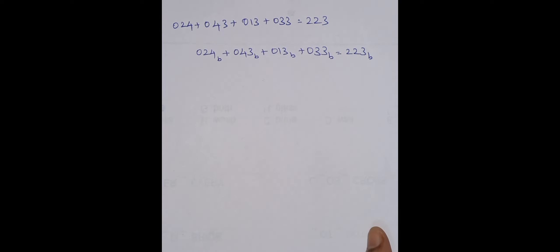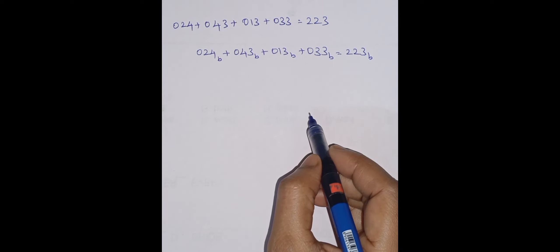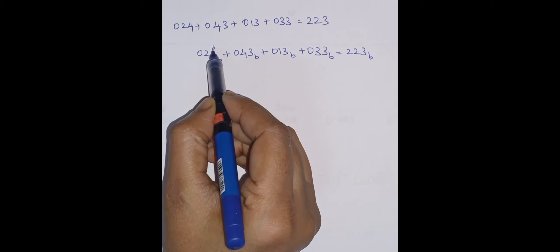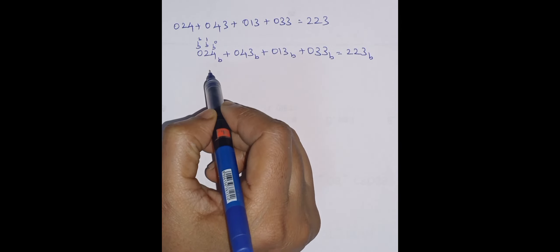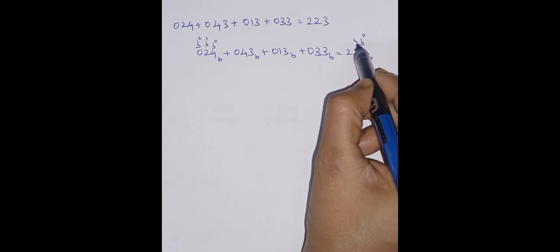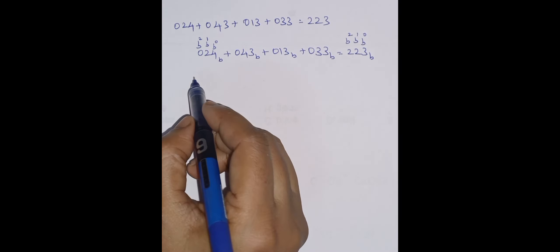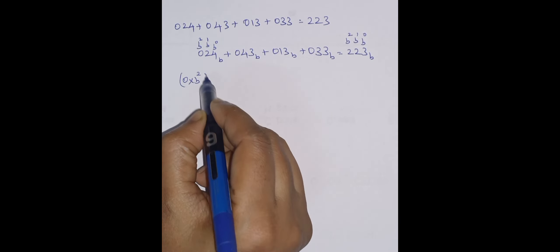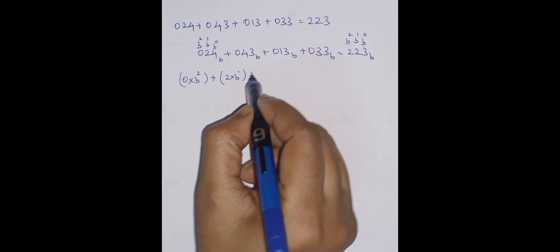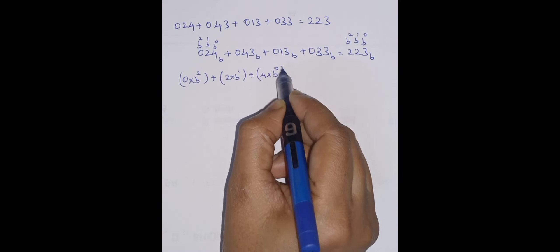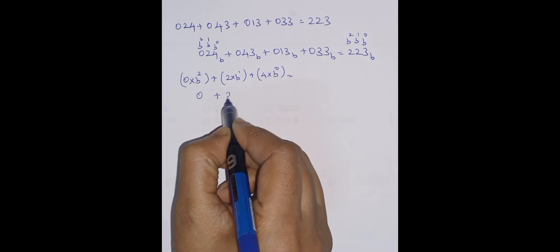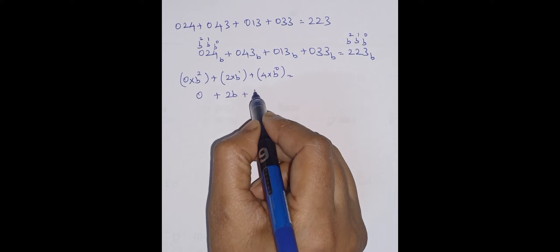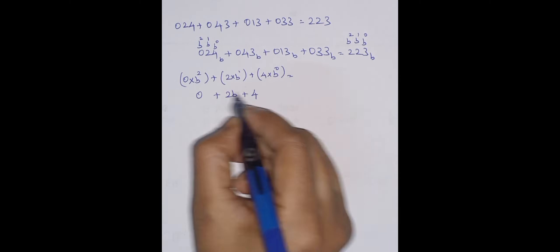What we can do here is apply positional weights. The positional weight for the units position is b power zero, then b power one, then b power two. So the equivalent decimal for the first term 024 is: zero into b squared plus two into b one plus four into b zero, which gives us 2b plus 4.